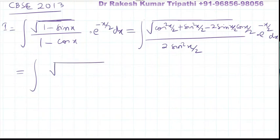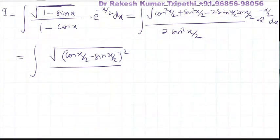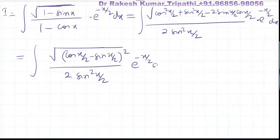Under the square root, the numerator becomes cos²(x/2) + sin²(x/2) - 2·sin(x/2)·cos(x/2), which equals (cos(x/2) - sin(x/2))². Since no condition is given, writing it as (sin(x/2) - cos(x/2))² or (cos(x/2) - sin(x/2))² are both correct. So never mind — we have e^(-x/2) dx.